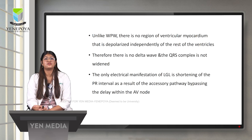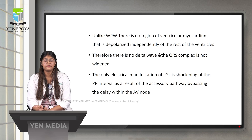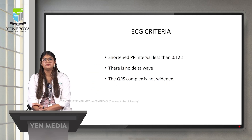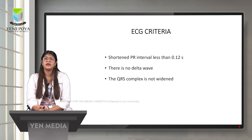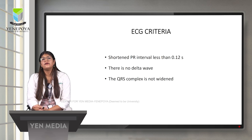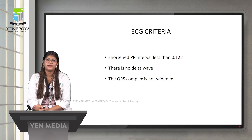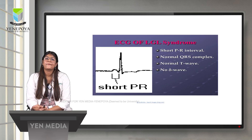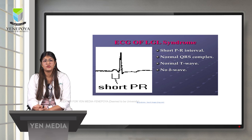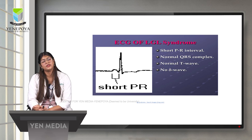The only electrical manifestation of LGL syndrome is shortening of the PR interval, as the accessory pathway bypasses the delay within the AV node. The ECG criteria for LGL syndrome are: shortened PR interval of less than 0.12 seconds, no delta wave, and a normal QRS complex that is not widened. There is no initial slurring upstroke of the QRS complex.